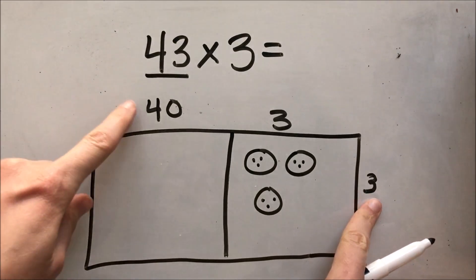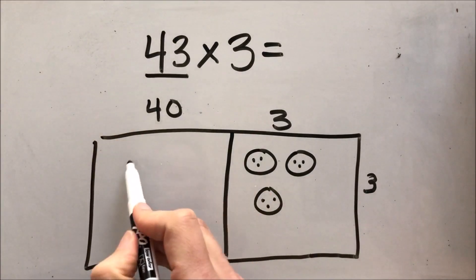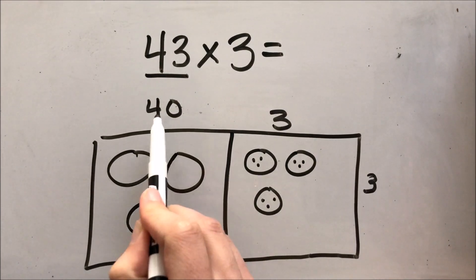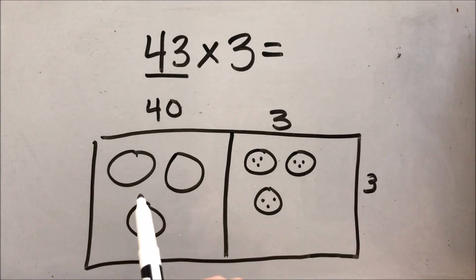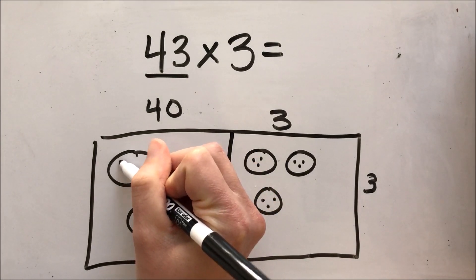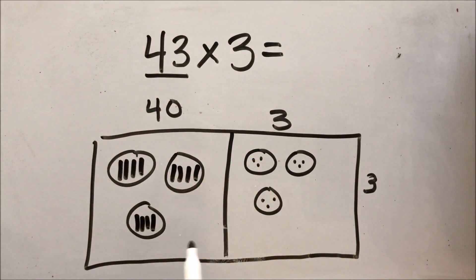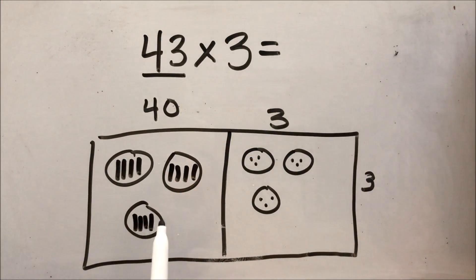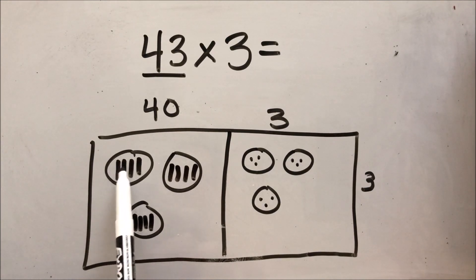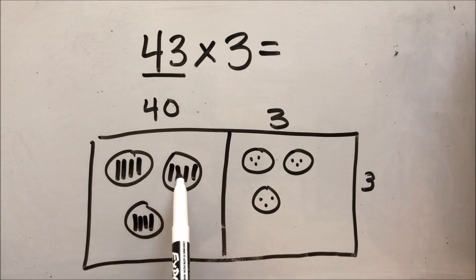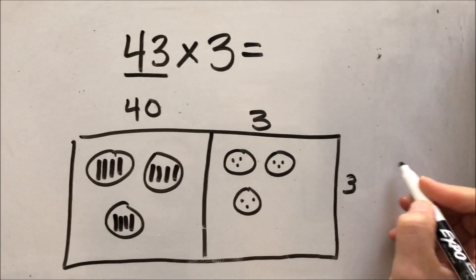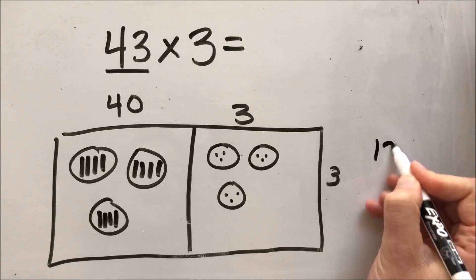First, I'm going to do 3 times 3, so I'll draw that out using my picture like we practiced last week. Next, I'm going to do 3 times 40, which means I need 3 groups. I'm not going to draw 40 individual tallies in each circle — it gets really messy. Instead, I'm going to draw 4 tens in each circle. I'll count up my tens by counting by tens: 10, 20, 30, 40, 50, 60, 70, 80, 90, 100, 110, 120. I'm going to jot that over here so I don't forget it.